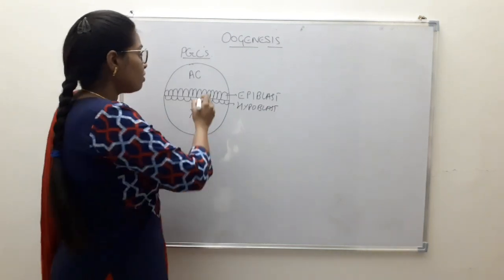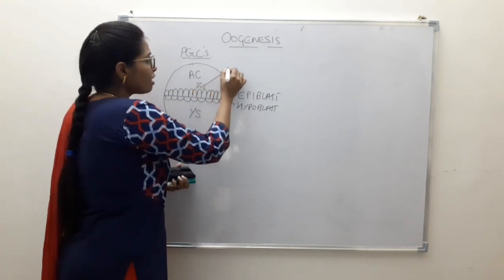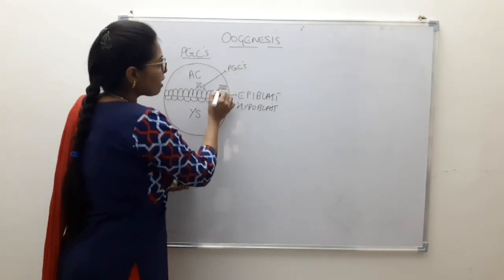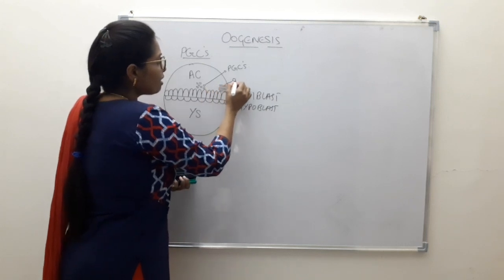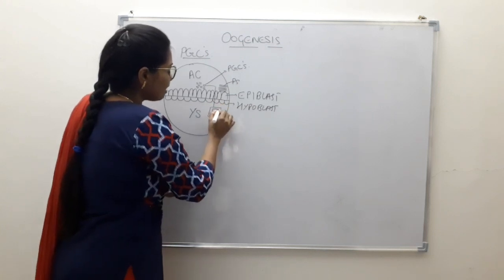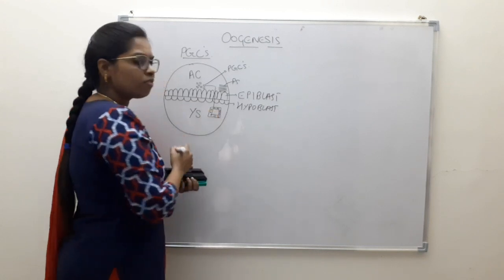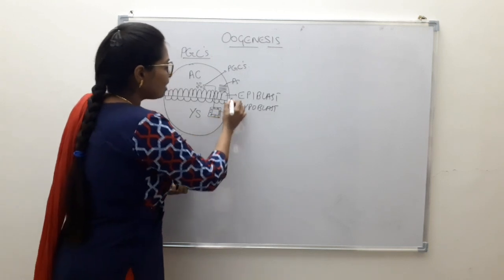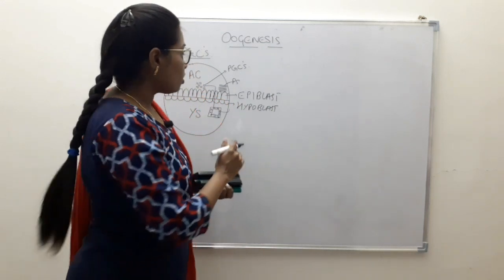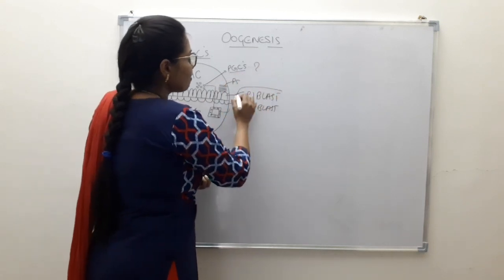Around the second week of development, the epiblast cells proliferated and gave rise to cells called primordial germ cells. On the 15th day, the primitive streak arose, so to escape from it, the primordial germ cells changed their location to a much safer place — the dorsal wall of the yolk sac. A frequently asked MCQ: primordial germ cells are derivatives of the epiblast.